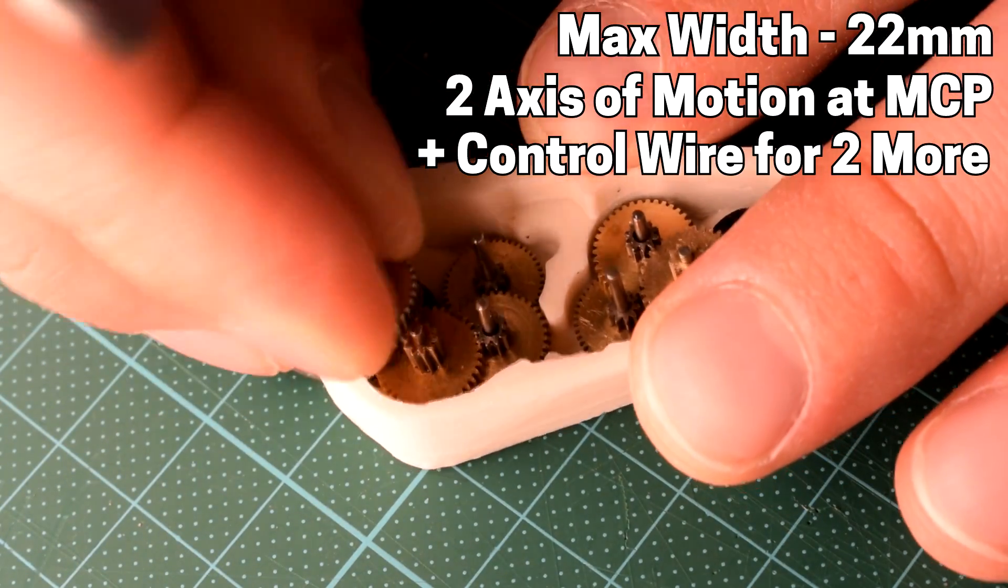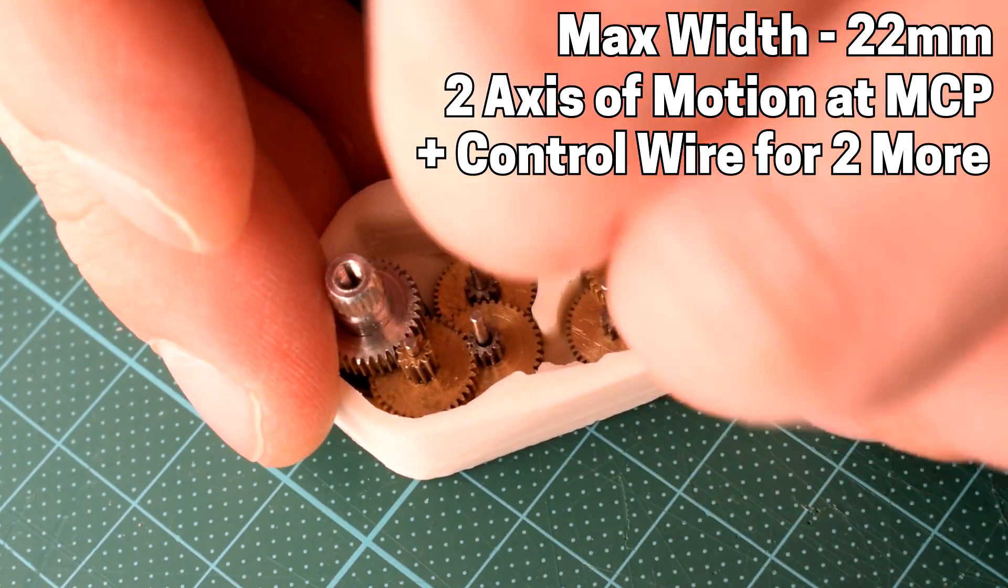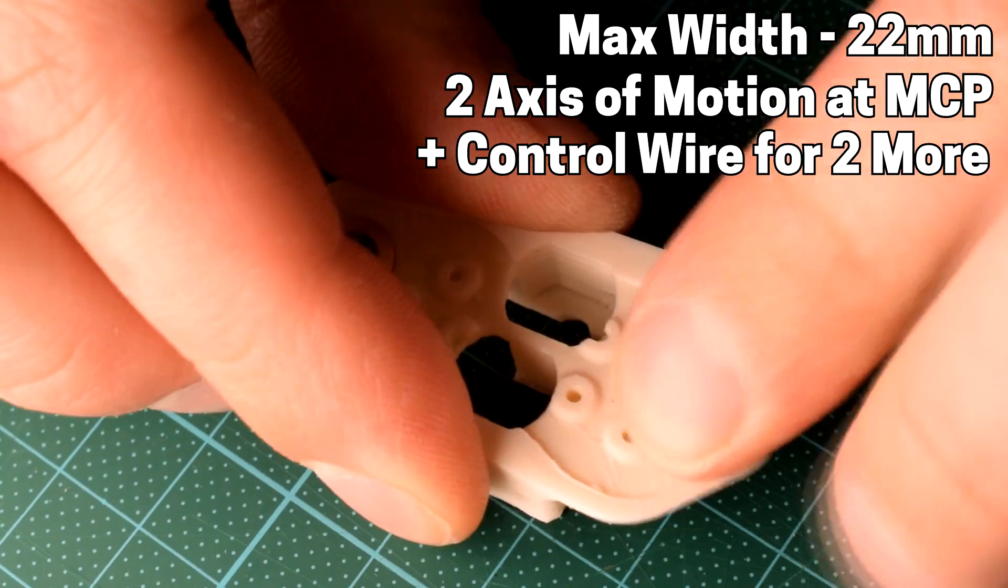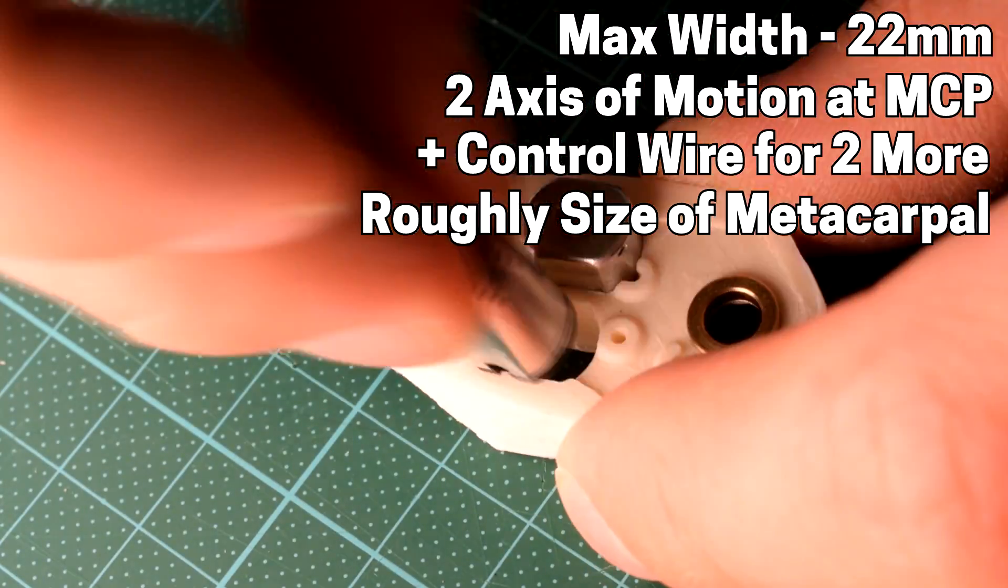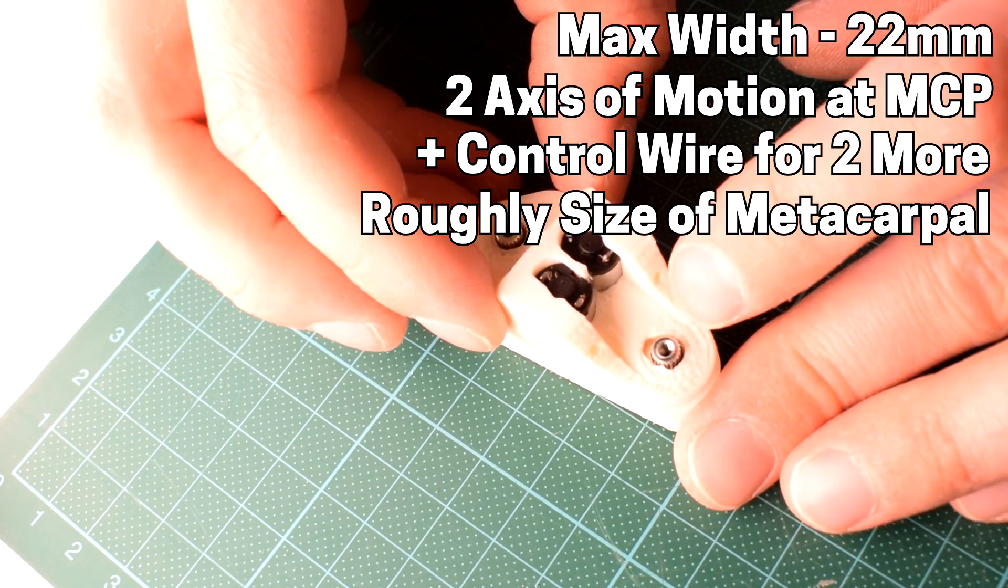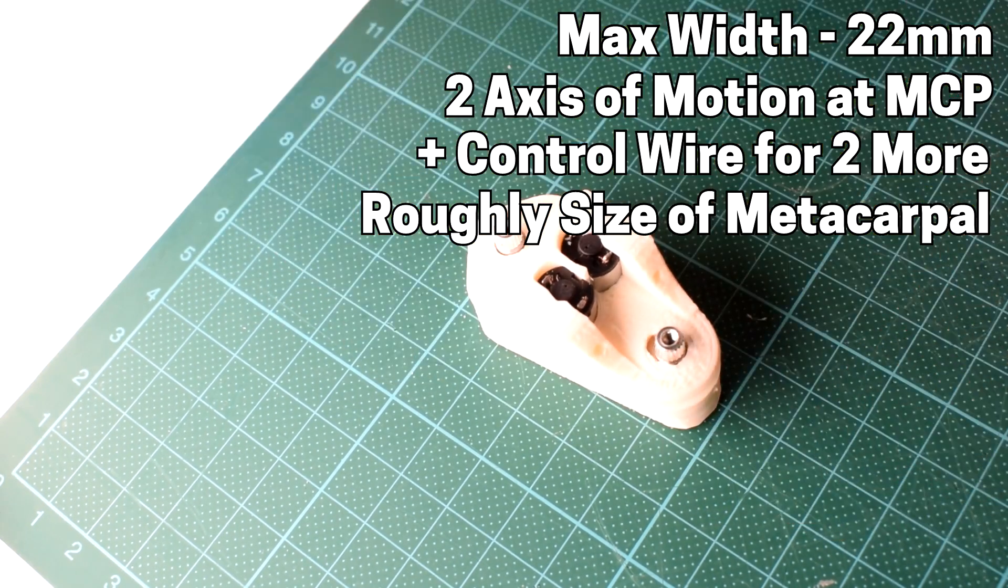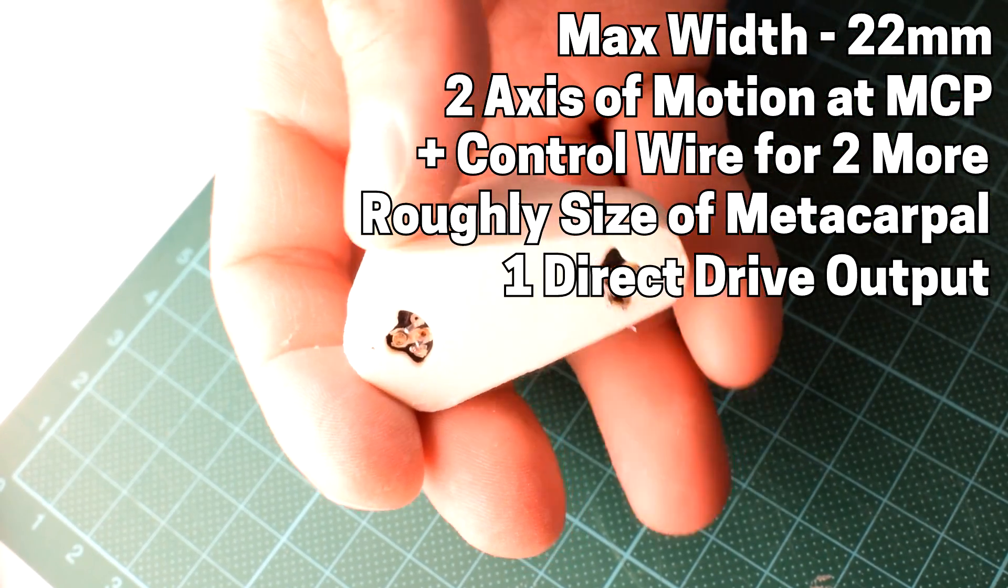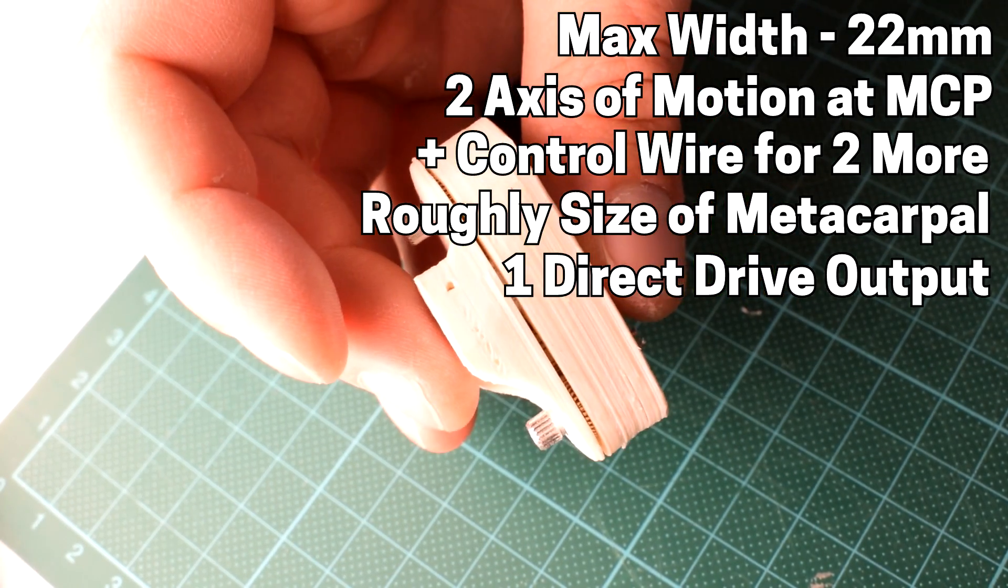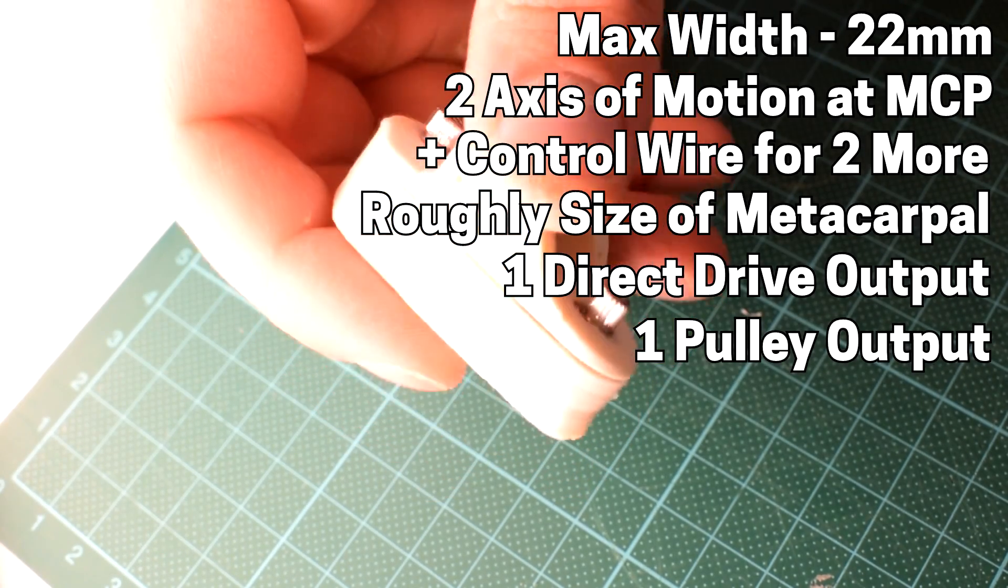And then the overall actuator that I'm designing, I would like it to be roughly the size of the metacarpal bones in a real hand, according to my hand model and my own hand that I'm using as reference. The actuator needs to have one output for a direct drive to the lateral motion of the finger and another output which drives a pulley, which is going to drive another joint via a cable actuation system.